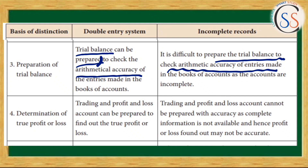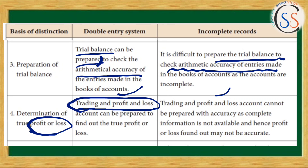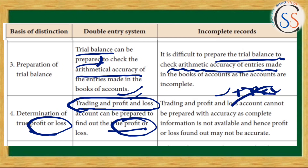The fourth difference is determination of true profit or loss. In the Double Entry System, trading account and profit and loss account are prepared, so we can determine the true profit or loss. In the Single Entry System, trading and profit and loss accounts cannot be prepared perfectly.